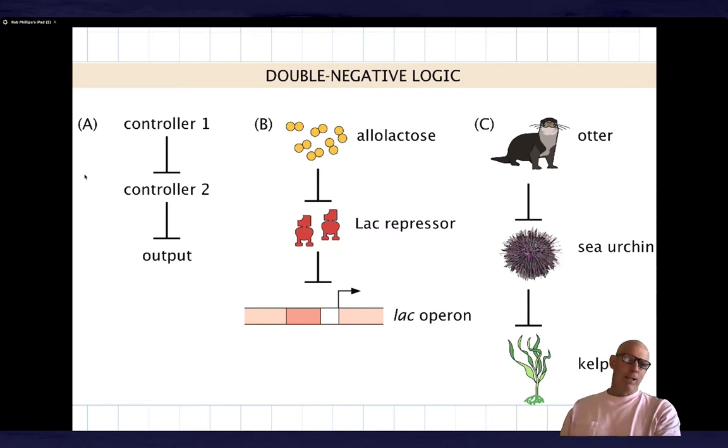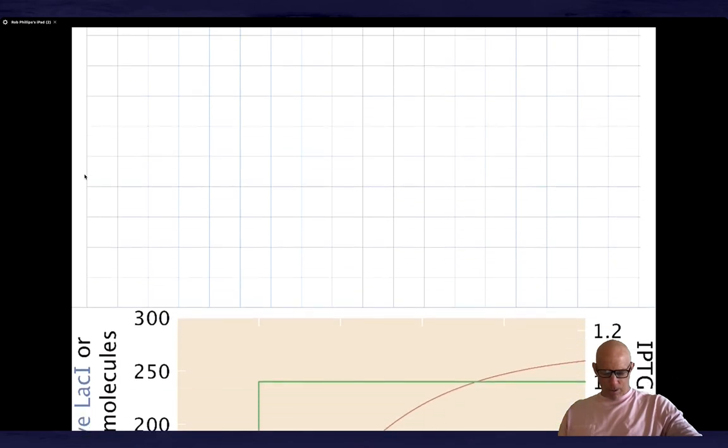One of the consequences is that there would be these things called sea urchin barons. The otter regulates urchins, and urchins regulate the kelp. Once the urchins destroy the kelp, the reef ecosystem is gone. What I'm going to focus on is in the middle, the famed lac operon. The idea is that allolactose is an inhibitor of lac repressor, and lac repressor is an inhibitor of the genes in the lac operon such as beta galactosidase.